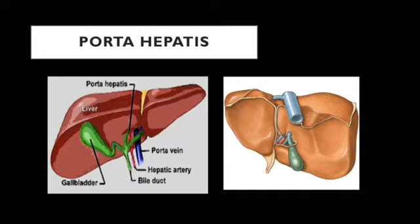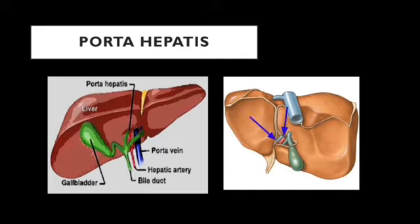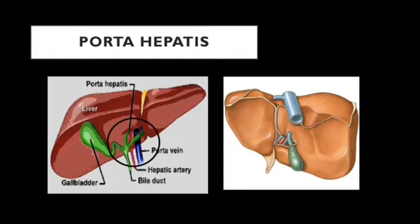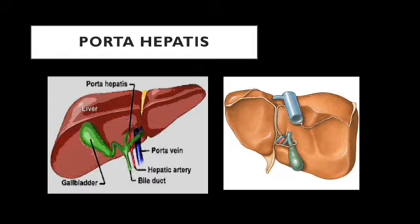Porta hepatis is present in the inferior surface of the liver. It is a transverse slit-like structure serving as a gateway for entry and exit of structures. Its anterior and posterior lips are covered by peritoneum but the floor is non-peritoneal. Structures entering include branches of the hepatic artery, divisions of the portal vein, and the hepatic plexus of nerves. Structures exiting include the right and left hepatic ducts and lymphatics. The arrangement from anterior to posterior is: hepatic duct (anteriormost), hepatic artery (middle), and portal vein (posteriormost).